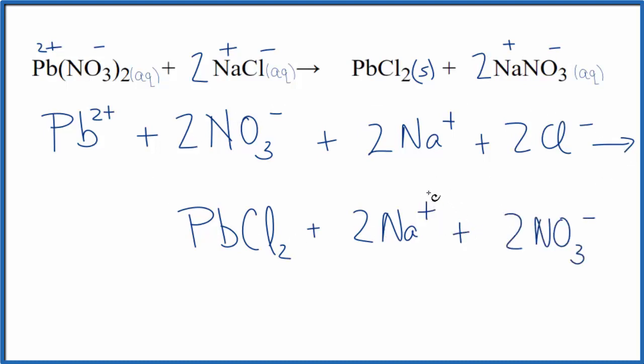We can now cross out the spectator ions. Those are the same on each side of the equation. So in the reactants we have this Na NO3, we have two of them, we have two of them here. Let's just cross those out.